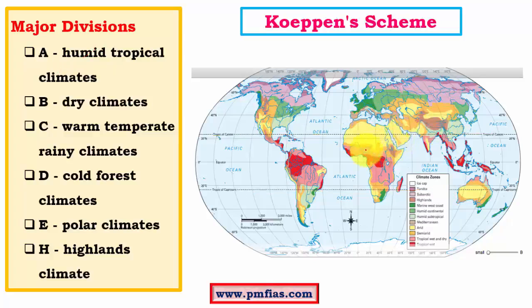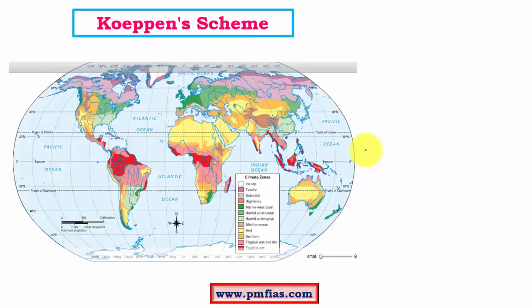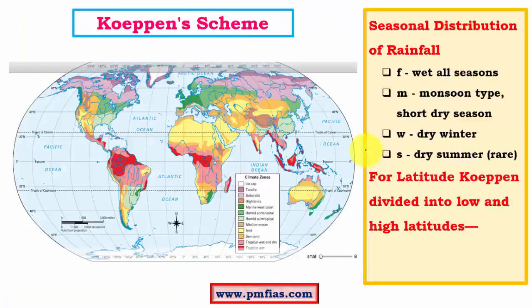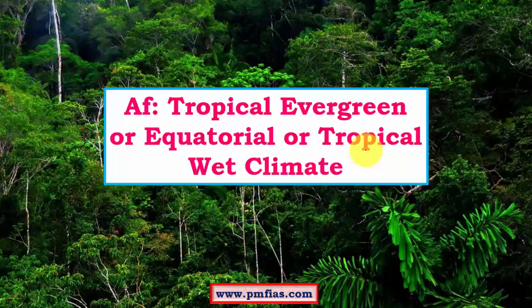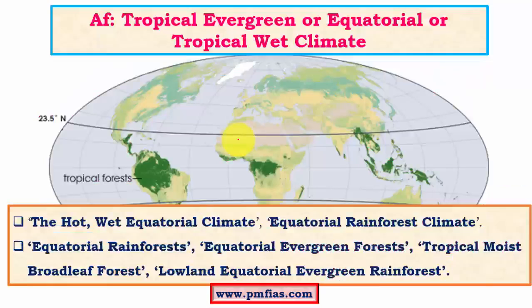We can understand which climatic regions exist where from the distribution map. Now we'll begin with tropical evergreen rainforests, also called the equatorial wet climate. The term itself suggests it's a wet climate with year-long rains. It is called by different names: hot wet equatorial climate, equatorial rainforest climate, or simply rainforest climate.